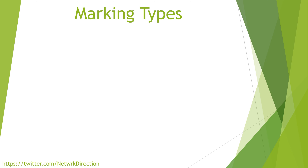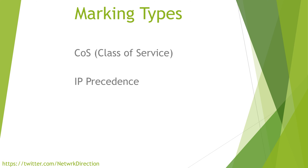But did you know there are different ways we can mark our traffic? We have class of service, which uses layer two traffic. Then there's IP precedence, which is the older method for layer three. We'll take a brief look at that, but we're really going to focus on DSCP markings, which is the most common method. But let's start with class of service.